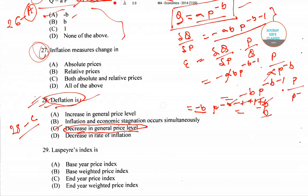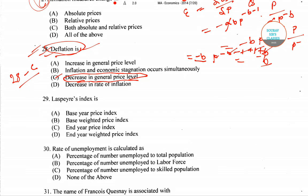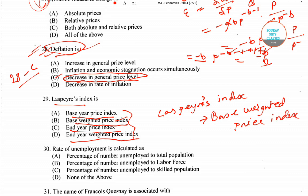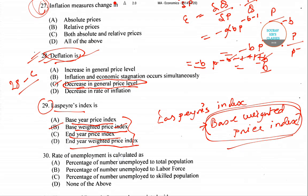Question number 29 asks about the Laspeyre's index. The four options are: base year price index, base weighted price index, end year price index, and end year weighted price index. The correct answer is option B — Laspeyre's index is the base weighted price index.